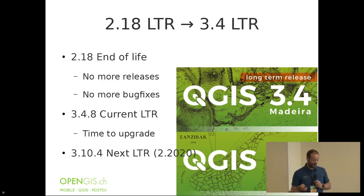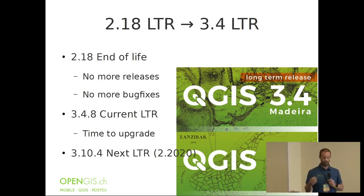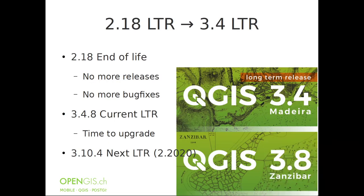We are now at 3.4, the long-term release. The last long-term release used to be 2.18. I'm mentioning this because if you had built Python scripts against the Python API of QGIS in 2.18, you will have to do some work. When we change the major number of a release — going from 2 to 3, or eventually 3 to 4 — it means we are breaking API compatibility, so you will need to fix your plugins, fix your scripts, fix your things.